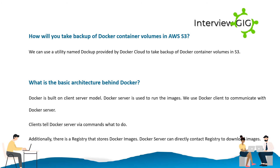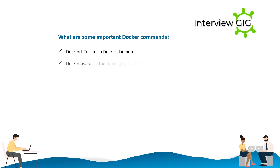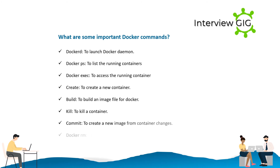What are some important Docker commands? dockerd — to launch Docker daemon. docker ps — to list the running containers. docker exec — to access the running container. create — to create a new container. build — to build an image file for Docker. kill — to kill a container. commit — to create a new image from container changes. docker rm — to delete a stopped container.